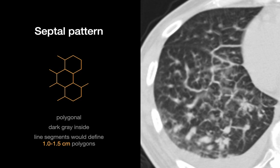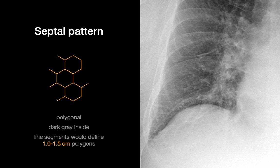Whatever polygon they're circumscribing is not going to be as tiny as the less-than-five-millimeter holes in a reticular pattern, but rather polygons measuring about one to one and a half or two centimeters. Septal patterns are hard to see even when pronounced on a chest x-ray. If you look carefully along the lateral margin of the inferior lower right lung, you might see some faint horizontal bands. That is what a septal pattern looks like on x-ray — we call these curly B lines.